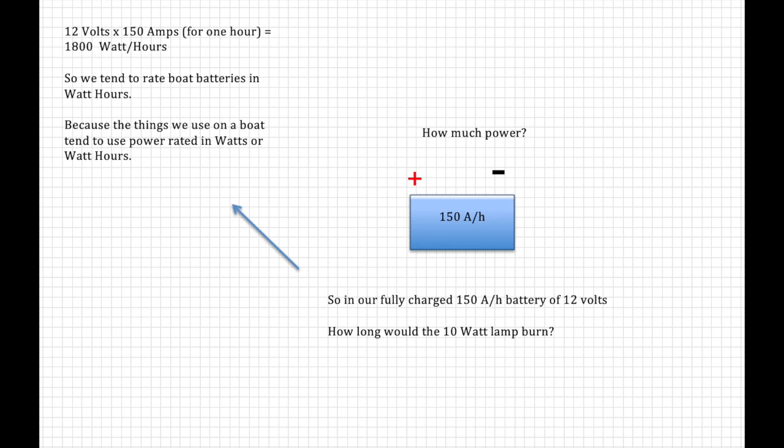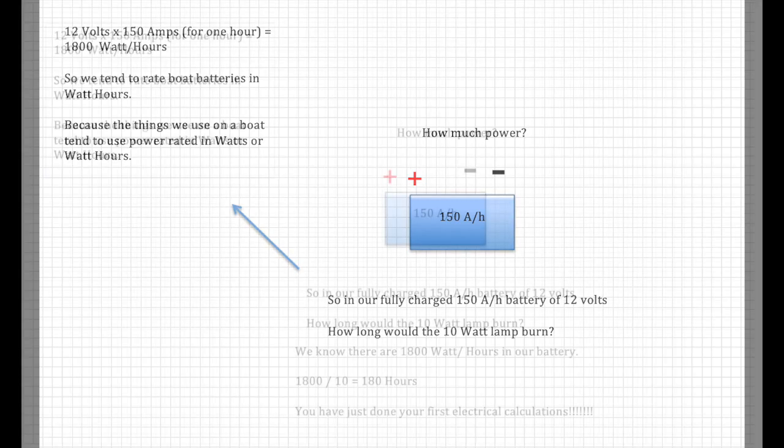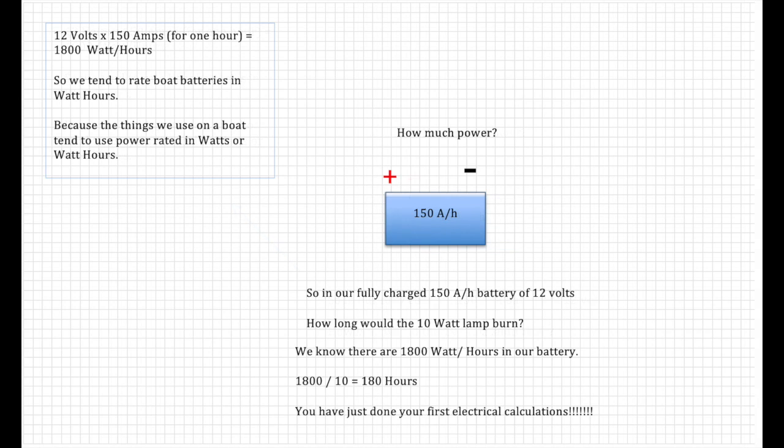So you can pause the video here and look at the top left hand side before answering this question. So in our fully charged 150 amp hour battery of 12 volts, how long would a 10 watt bulb burn for? Or be a light for? Well we've already established that there are 1800 watt hours in our battery. So 1800 divided by 10 equals 180 hours. Well done. You've just done your first electrical calculations.